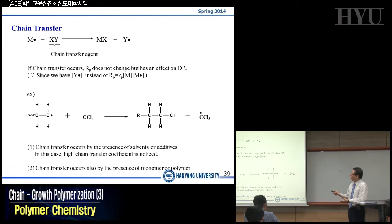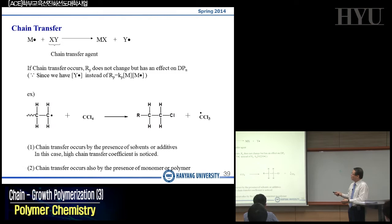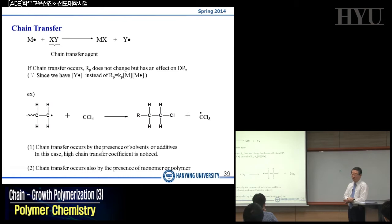So when you have X and Y, X will meet M dot so that will be a dead species, whereas we have Y dot, which is a new radical, but it's not active anymore. When chain transfer occurs, radical polymerization will not change because we have Y dot instead of M dot. The rate of polymerization is defined as Kp times M dot concentration and monomer concentration. So chain transfer does not change radical polymerization, but may have an effect on degree of polymerization.